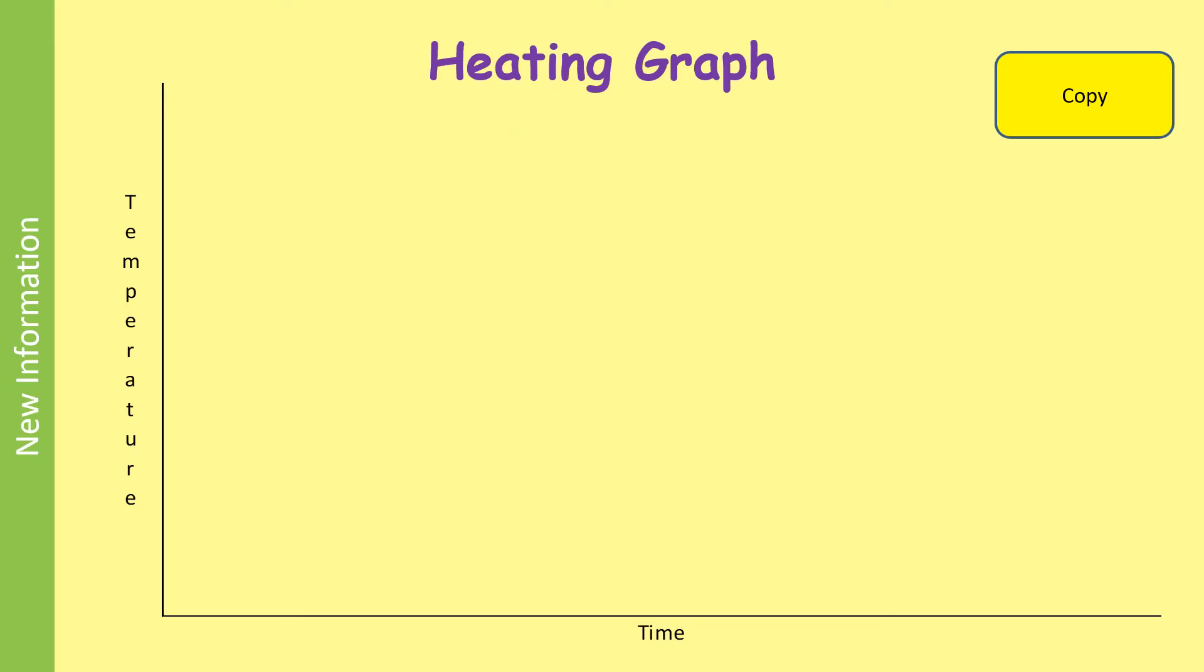This is called a heating graph. It shows what happens when we heat a substance. If we start with a solid substance and supply energy to it in the form of heat, the temperature will rise as shown in this graph.